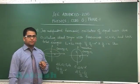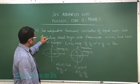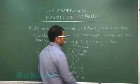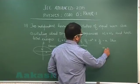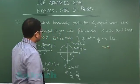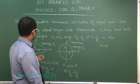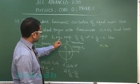Question number 17 from simple harmonic motion. It says two independent harmonic oscillators of equal mass, so m1 equals m2, are oscillating about origin with frequencies omega 1 and omega 2, and have total energies E1 and E2 respectively.